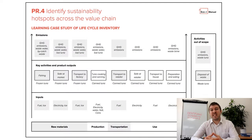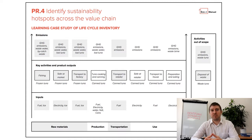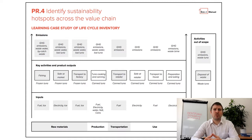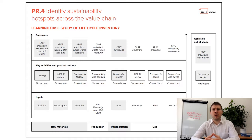The second step is to describe the sustainability impacts which you have outlined in the lifecycle inventory. This means thinking about environmental, social and economic issues, which are all very important to eco innovation.